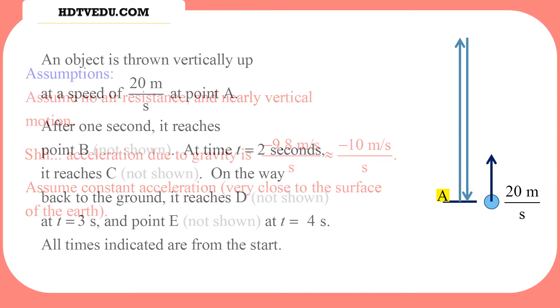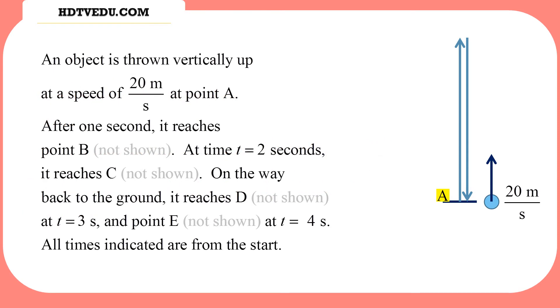Let's review the problem again. An object is thrown vertically up at a speed of 20 meters per second at point A. After one second, it reaches point B. At time t equals 2 seconds, it reaches point C. On the way back to the ground, it reaches point D at t equals 3 seconds, and point E at t equals 4 seconds. All times indicated are from the start.